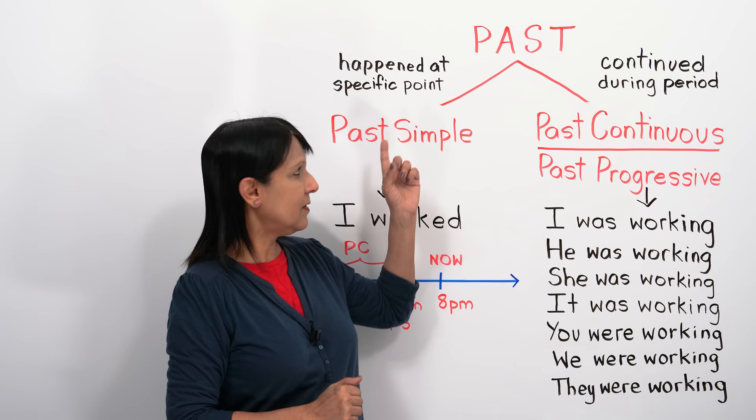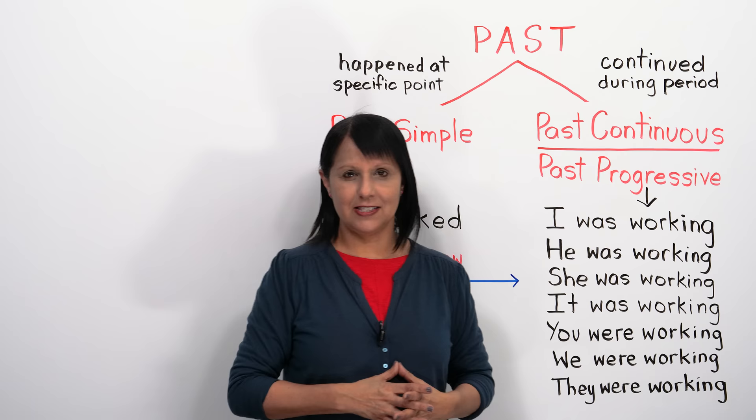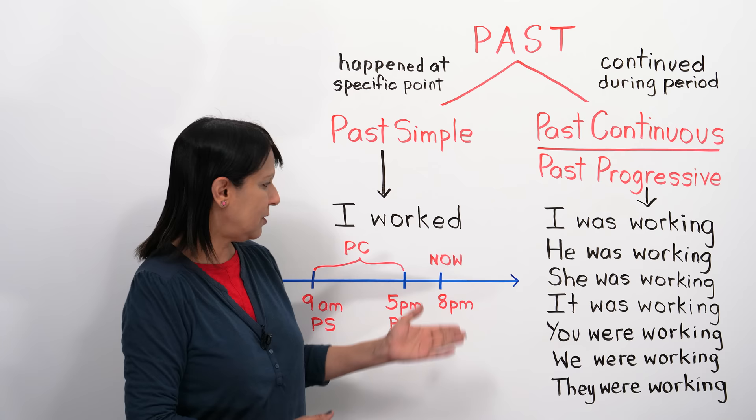Here we're just talking about the one action, whereas with the past continuous we're talking about the action that continued, how long it continued, and we want to emphasize that. Let's look at an example with our timeline.